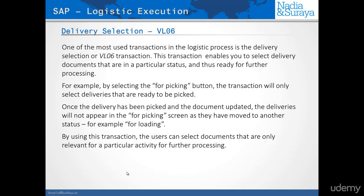One of the most commonly used transactions is VL06, which allows you to select deliveries based on a particular status. The advantage of this is that it will select all the deliveries that have a particular status, process those deliveries one by one, get them out of the queue, and then someone else would select and process deliveries in different statuses.